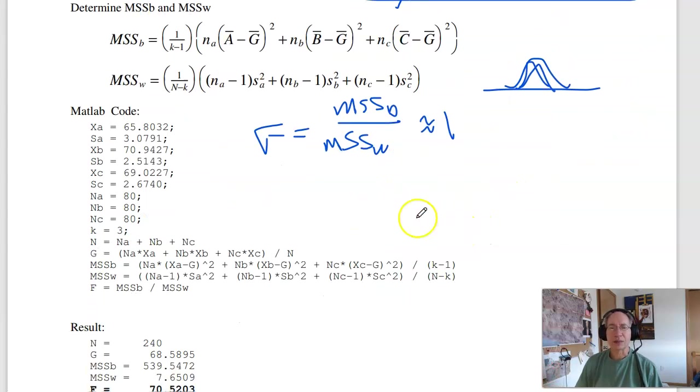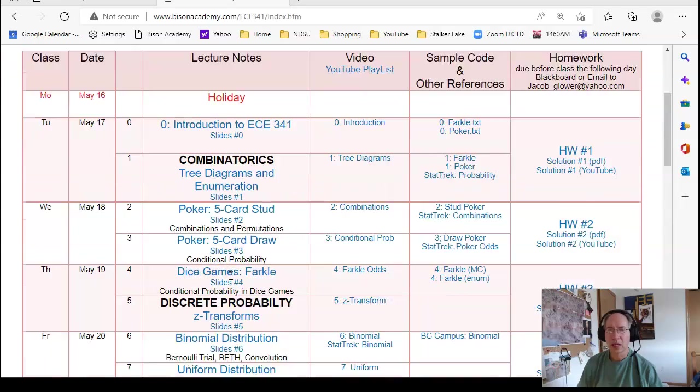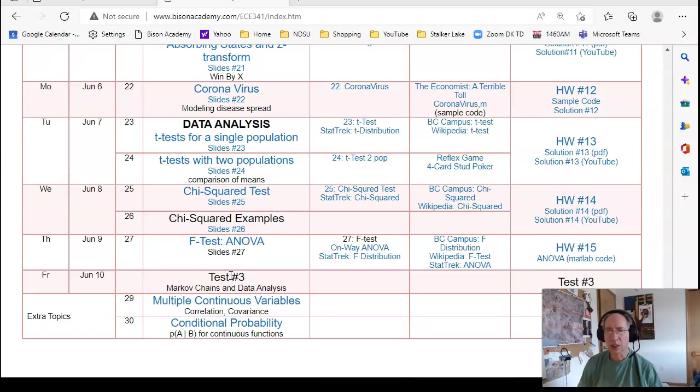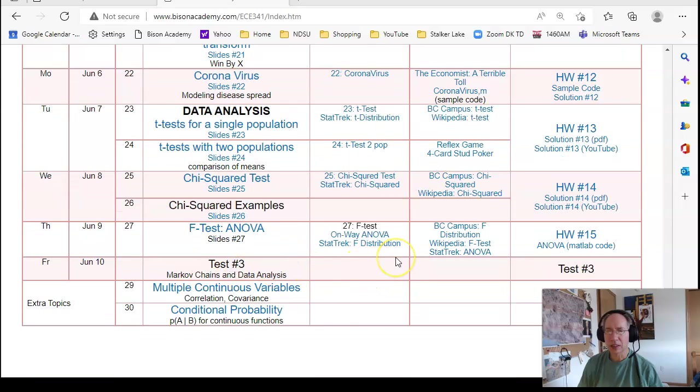One way to do that is you can form an analysis of variance table, or easier, use MATLAB. In MATLAB, I'll just input the mean of A, standard deviation of A, mean of B, standard deviation of B, and so on. You can type it in, copy and paste, or find it located somewhere.